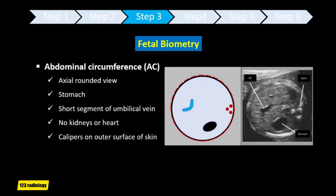The abdominal circumference is measured on axial view through the upper part of the abdomen. It must be rounded, with the stomach and a short segment of the umbilical vein visible. There should be no kidney or heart visible, and the calipers should be placed on the skin line. Abdominal circumference is used with other biometric parameters to estimate fetal weight and may allow detection of intrauterine growth restriction or macrosomia.